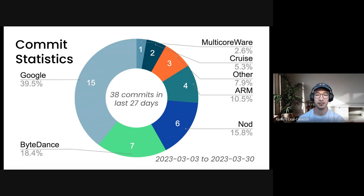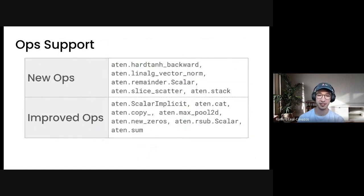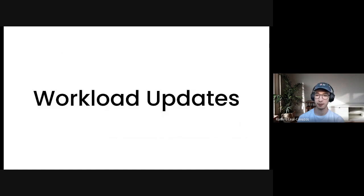These are some statistics from the last month. We have 38 commits in total from a nice variety of contributors, so thank you everyone who has been working on changes in TorchMLIR. This is just a brief glance at some of the work that has taken place — new ops being added to one of the three backends and also improved ops. I'll now hand it off to Anush to give us some updates.